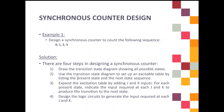Based on this example, there are several steps. The first step, you need to draw the transition state diagram. Then you need to set up the excitation table. You need to find the J and K input, which is based on the J and K excitation table previously — which is 0X, 1X. And then the last step, you design the logic circuit.